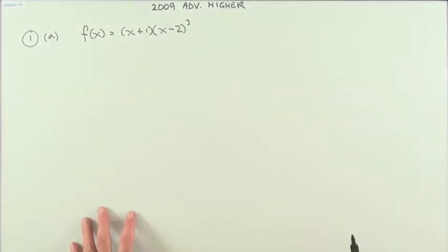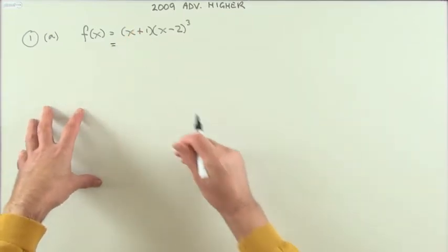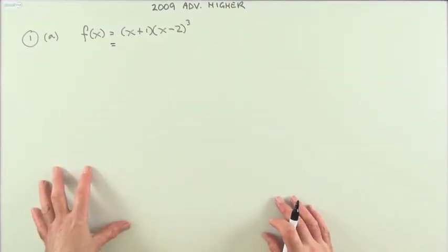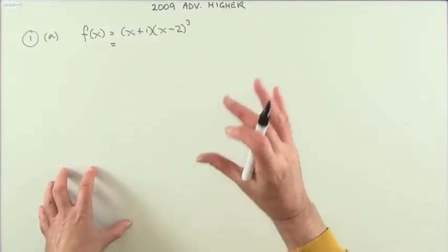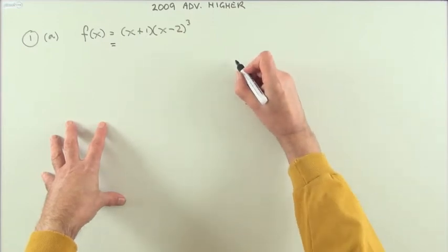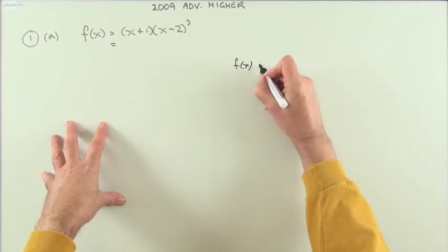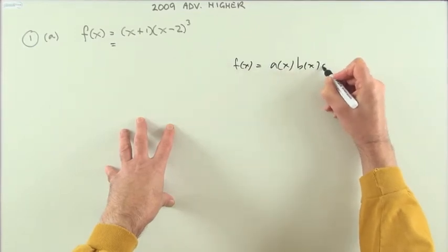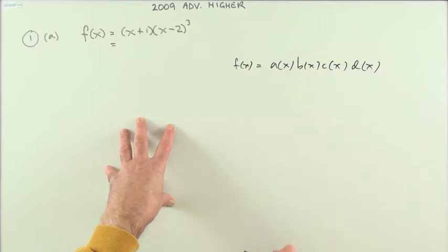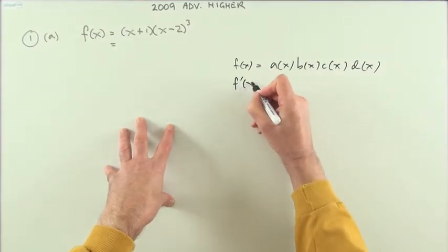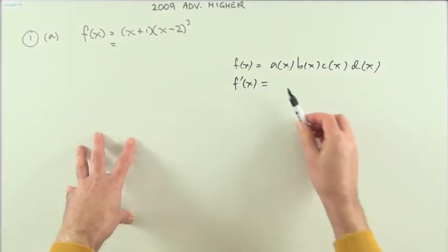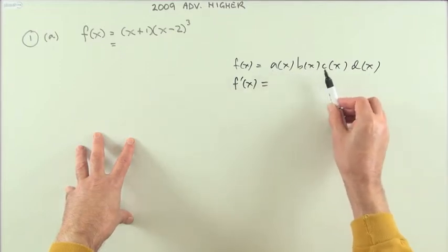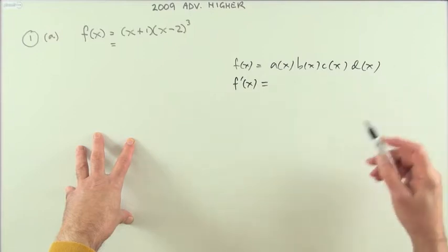So that's just going to be the product rule then. There are two parts to it, you could consider that four parts expanding that out but there's no need to do that. If it was a product made up of several functions, there's four to begin with, then to get the derivative it's simply a case of taking turns, going through them cyclically, differentiating one of them at a time, leaving the others alone.